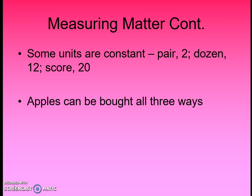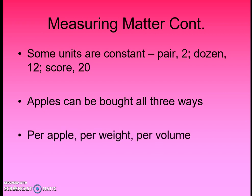Let's take a look at apples. Apples can be bought three different ways: per apple, per weight, or per volume. If you're going to a convenience store and buying just one apple, they'll probably charge you 25 cents. But if you go to the grocery store buying in bulk, they'll charge you per weight — about 59 cents per pound. Or if you go to an orchard and pick them off a tree, you buy a bag, and you pay for the volume of that bag.